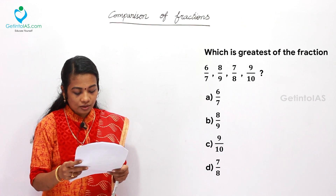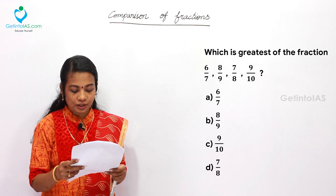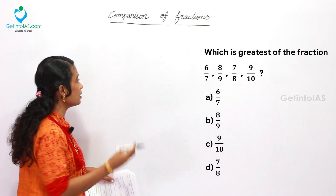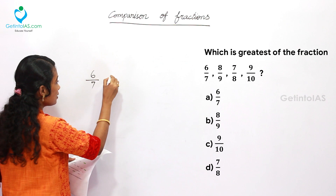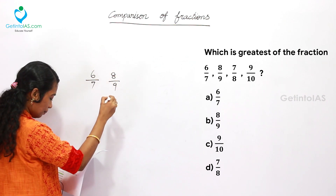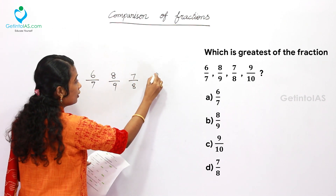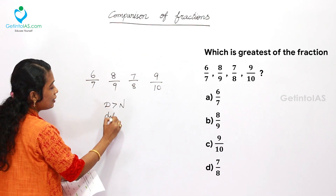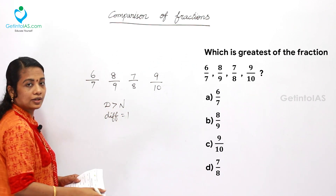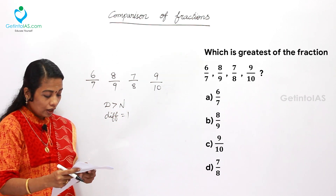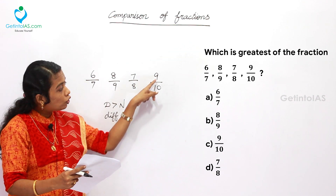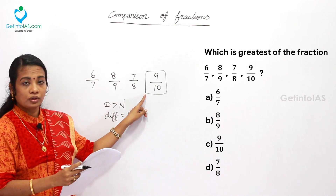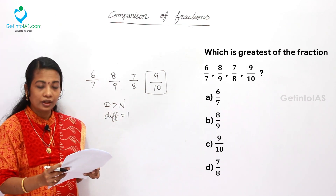Next question: which is the greatest among 6/7, 8/9, 7/8, and 9/10? In all cases the denominator is higher and the difference is 1 in every case. Both conditions are satisfied, so larger the numerator, larger the fraction. The largest numerator is 9, so 9/10 is the greatest, given in option C.